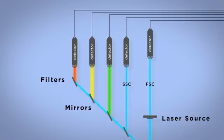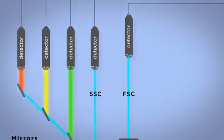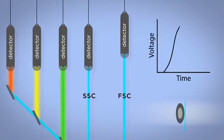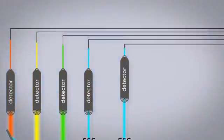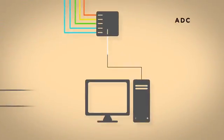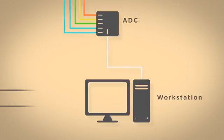The detectors convert the light energy into a voltage pulse which correlates to the intensity of that event. The electronic system then collects the pulse signals and processes them for display in the software, which can be customized to analyze the multi-parametric data.